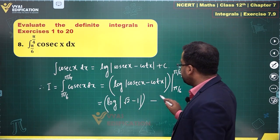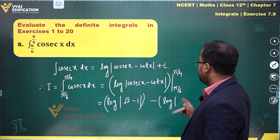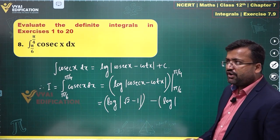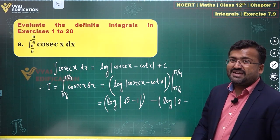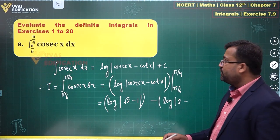This is the first term, minus the second term: log of modulus cosec π/6. Cosec π/6 is important - it will be 2, minus cot π/6, which will be √3.